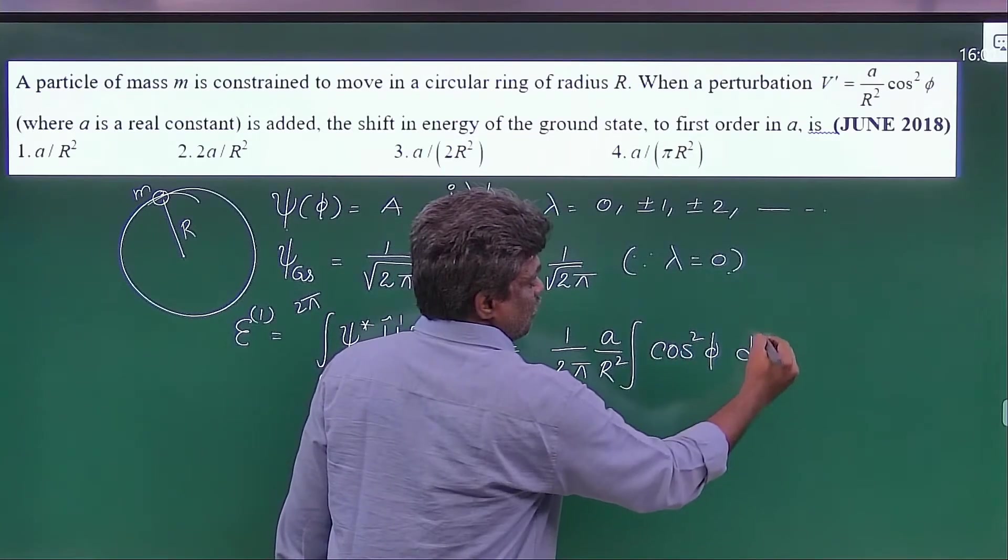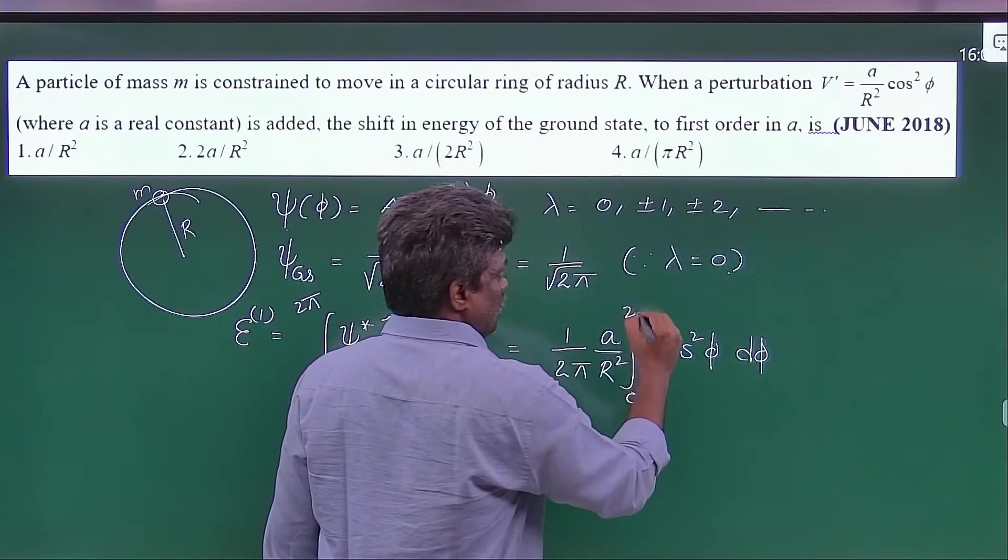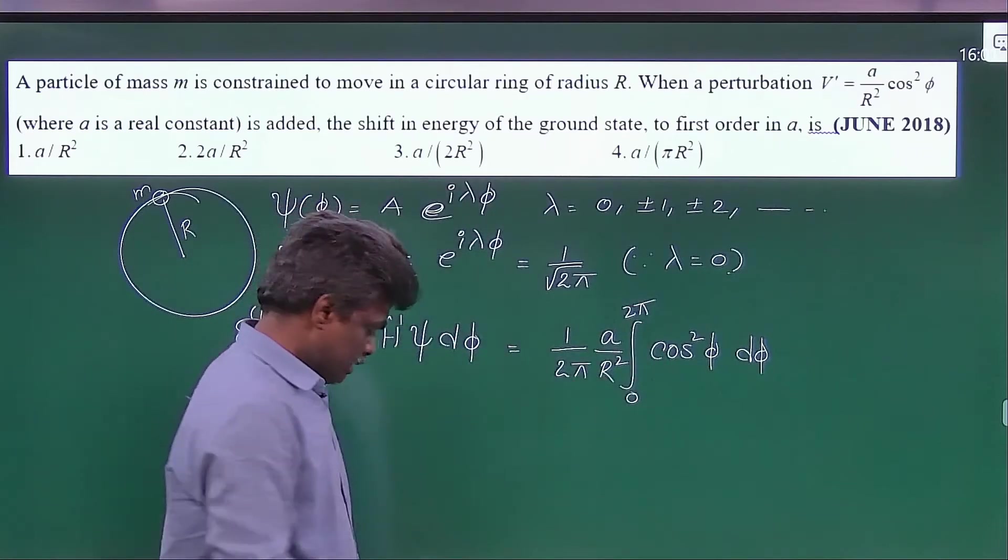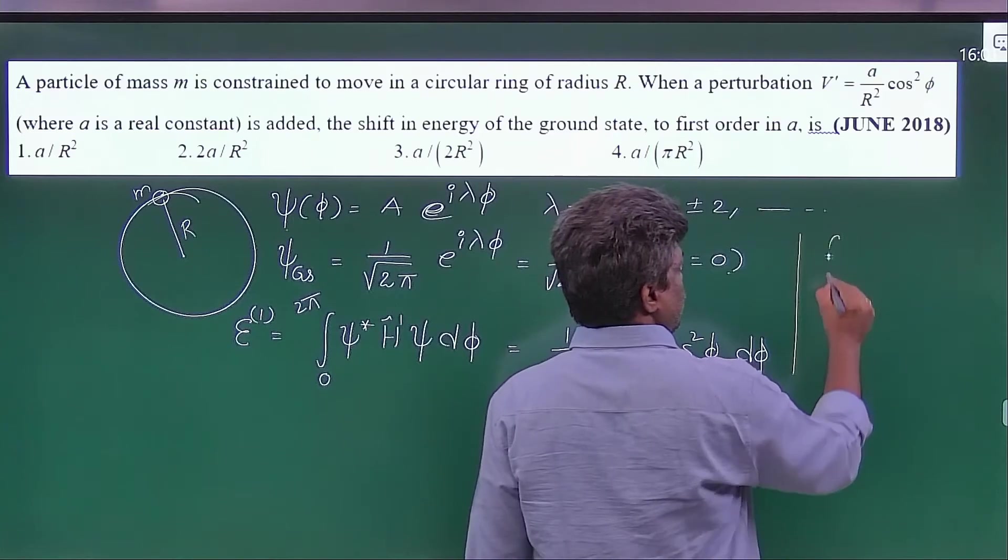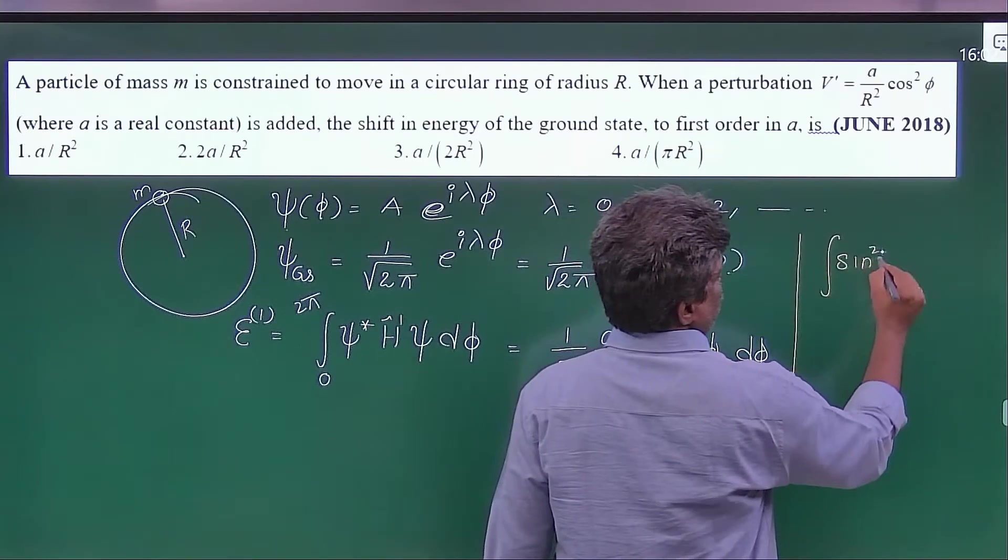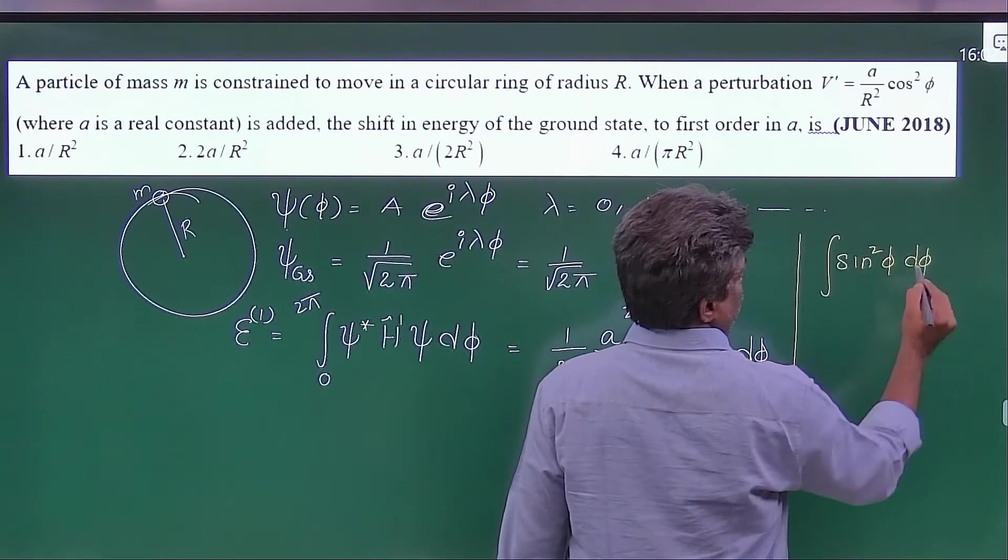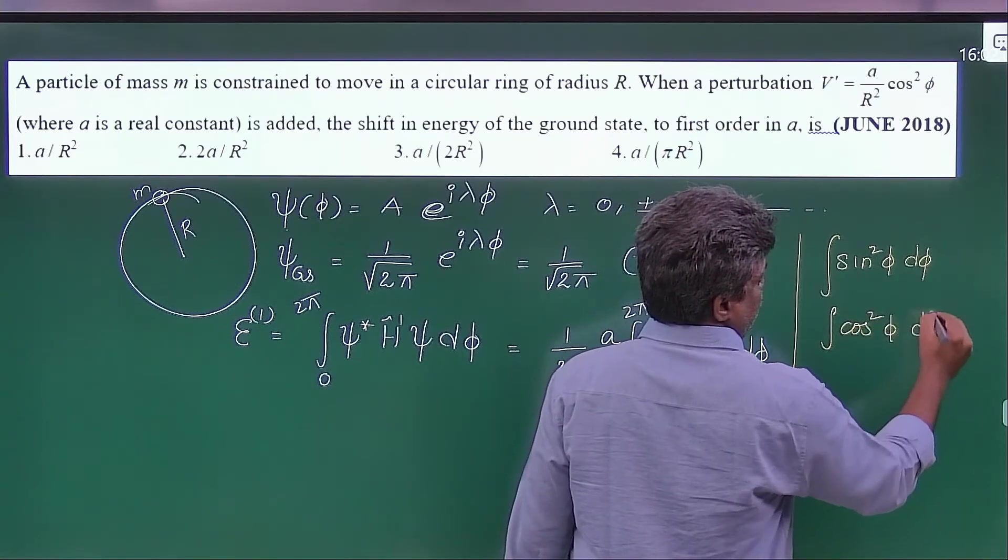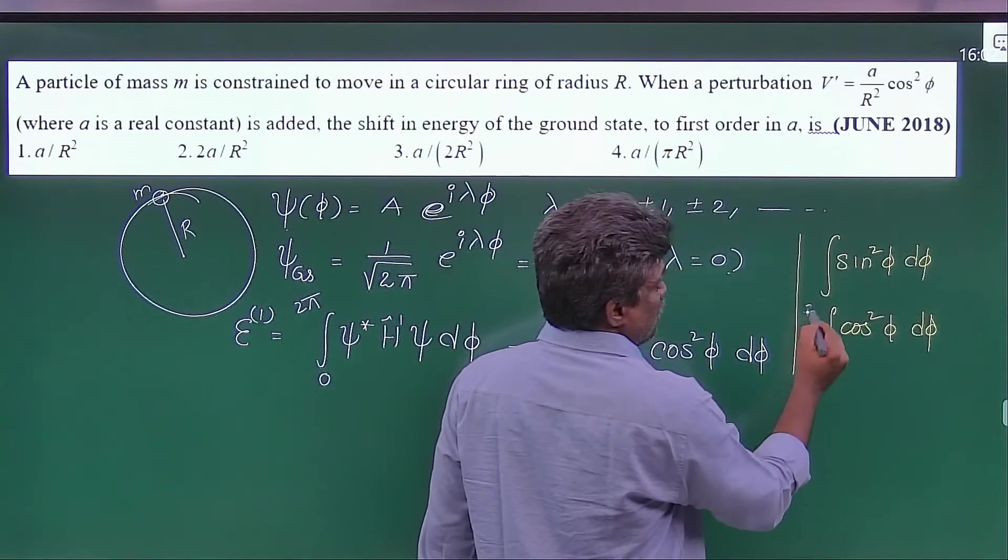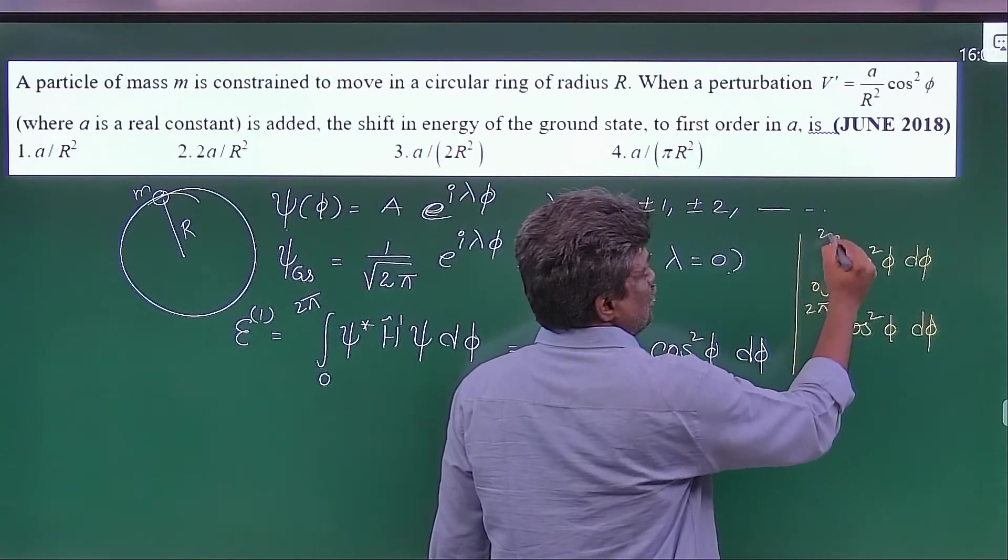Whenever you have cos square or sine square, you just apply a small technique. That is, integral sine square phi d phi or integral cos square phi d phi. If you take the total interval, total interval means 0 to 2 pi.